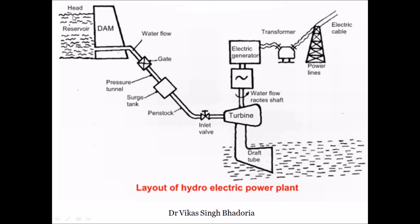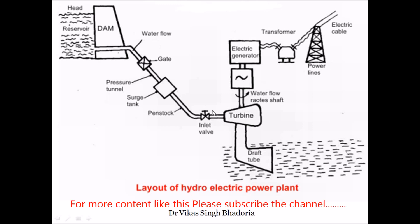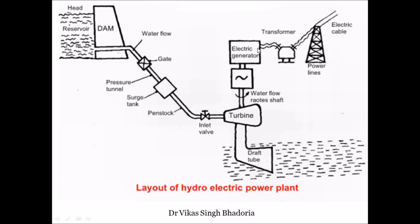This is the general layout of a hydropower plant. The head is shown here; this is the reservoir, followed by the flow of water. Gates are used to control the flow of water, then comes the pressure tunnel, surge tank, penstock, and inlet valve — also used to control flow. Water strikes the turbine blades and is discharged through draft tubes. The turbine shaft is coupled to an electrical generator, converting mechanical energy into electrical energy, which is then connected to power lines through a transformer.